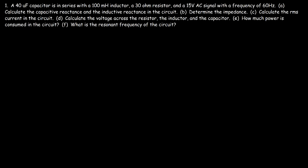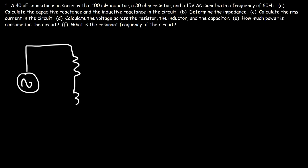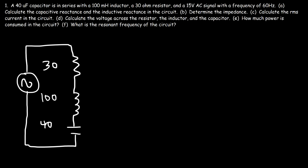In this video we're going to focus on the series RLC circuit. In this example we have a capacitor in series with an inductor, a resistor, and an AC signal. Here's the resistor, here's the inductor, and here's the capacitor. We have a 30 ohm resistor, a 100 millihenry inductor, and a 40 microfarad capacitor, and a 15 volt 60 Hz AC signal.